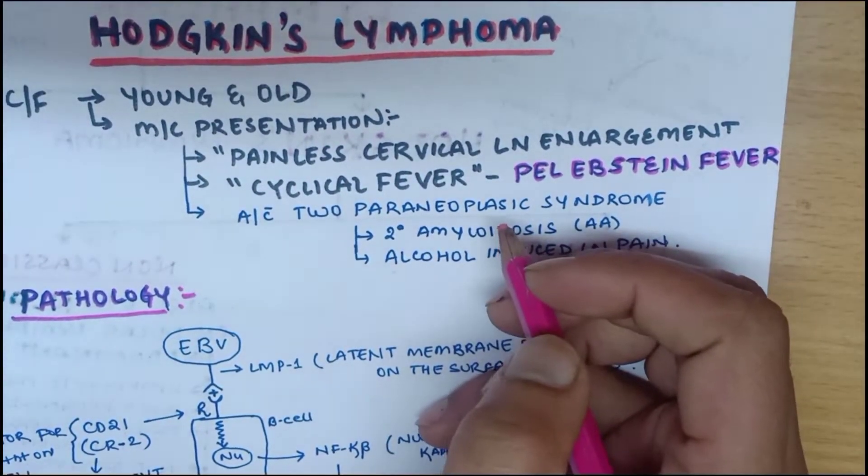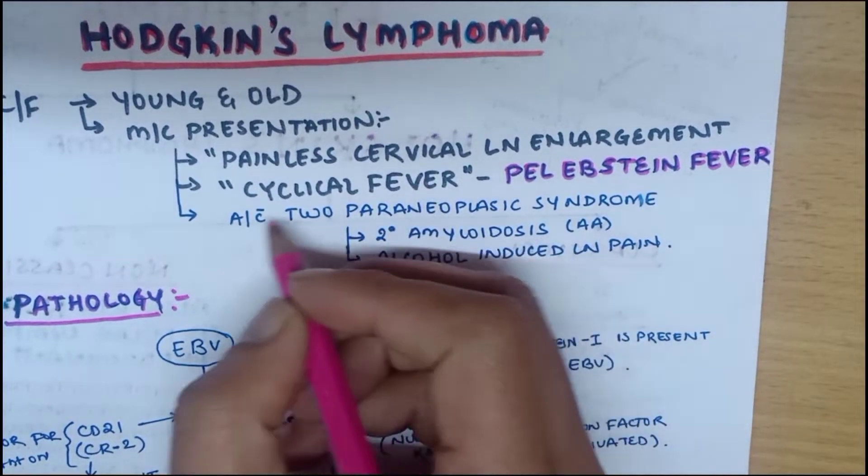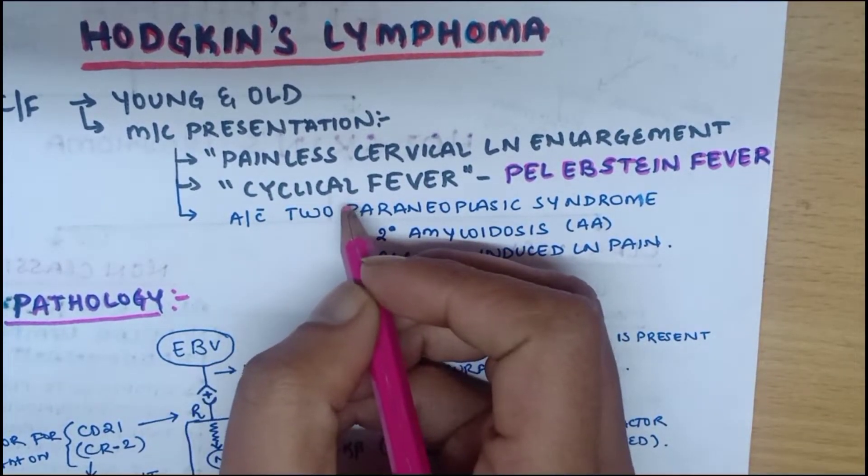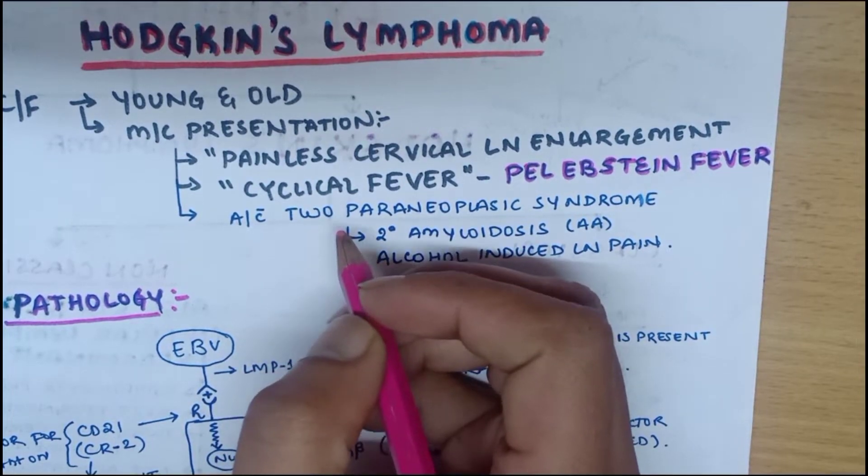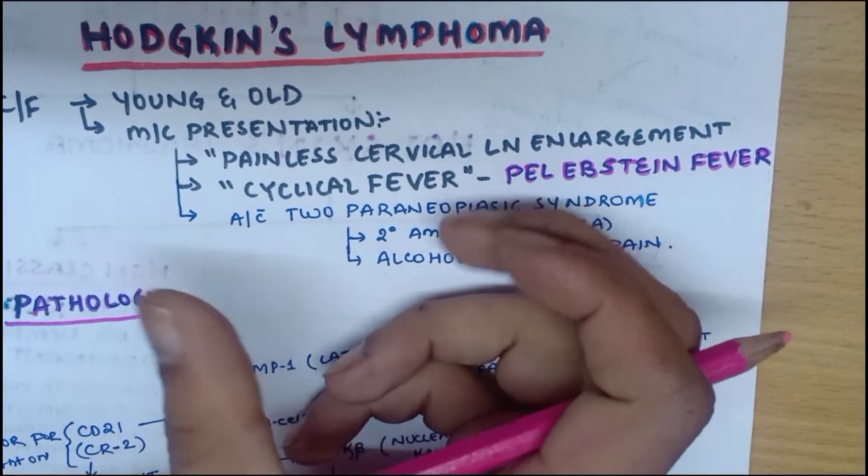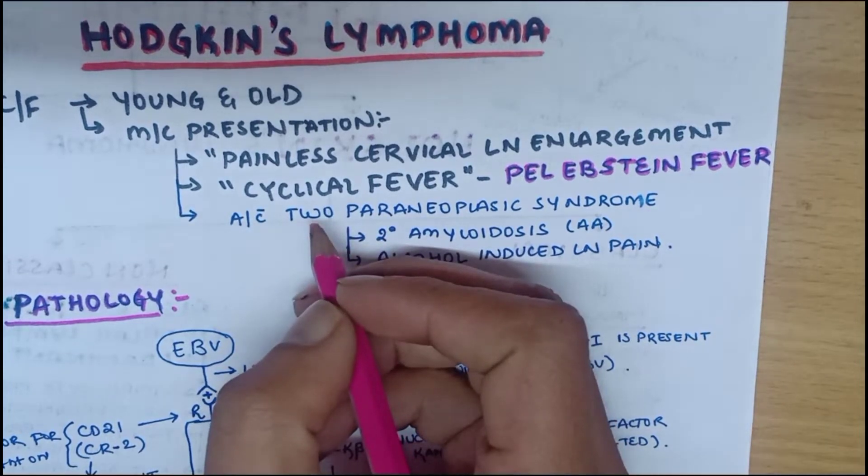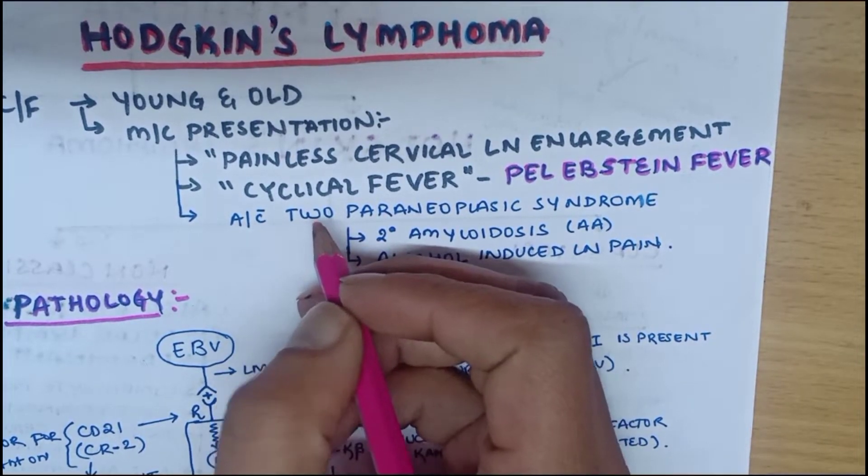When a patient has cyclical fever, there will be a rise in body temperature for a certain duration, it will come back to normal temperature, and after a certain time period the patient will have a rise in body temperature again. The fever comes in a cyclical pattern.